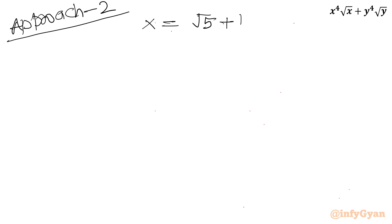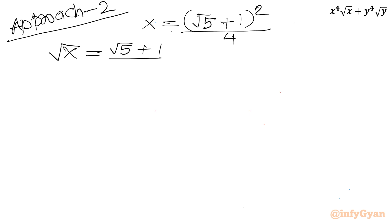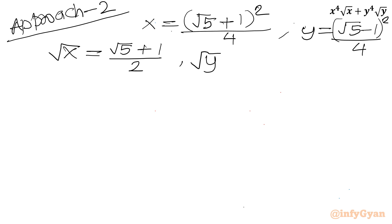Now for Method 2: x = (√5 + 1)² / 4, so √x = (√5 + 1) / 2. Similarly, y = (√5 - 1)² / 4, so √y = (√5 - 1) / 2. The calculation of √x and √y is complete.